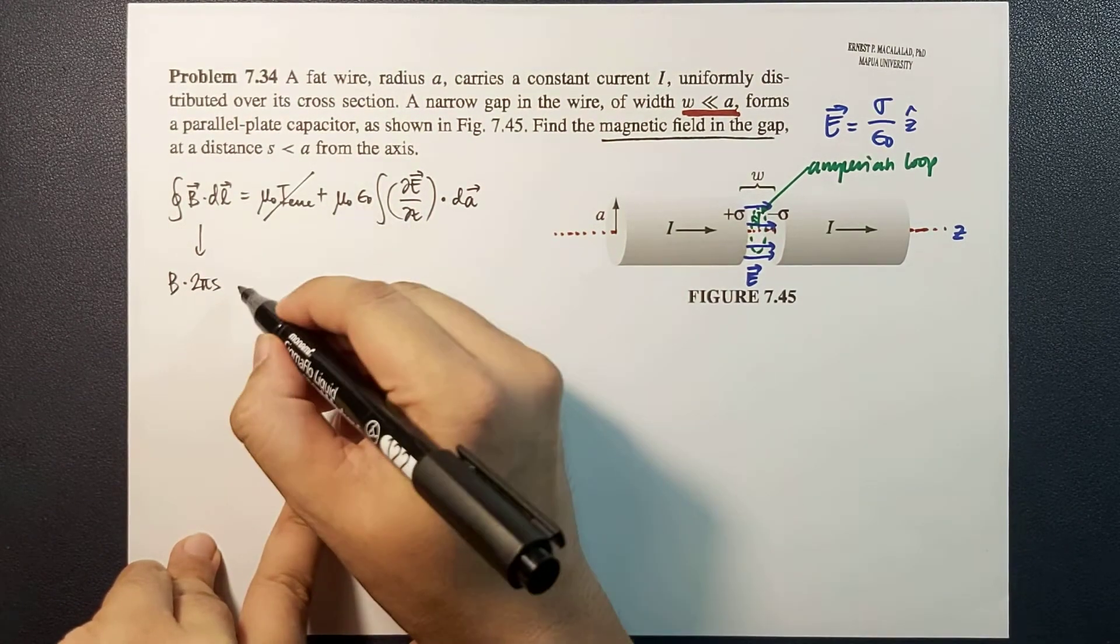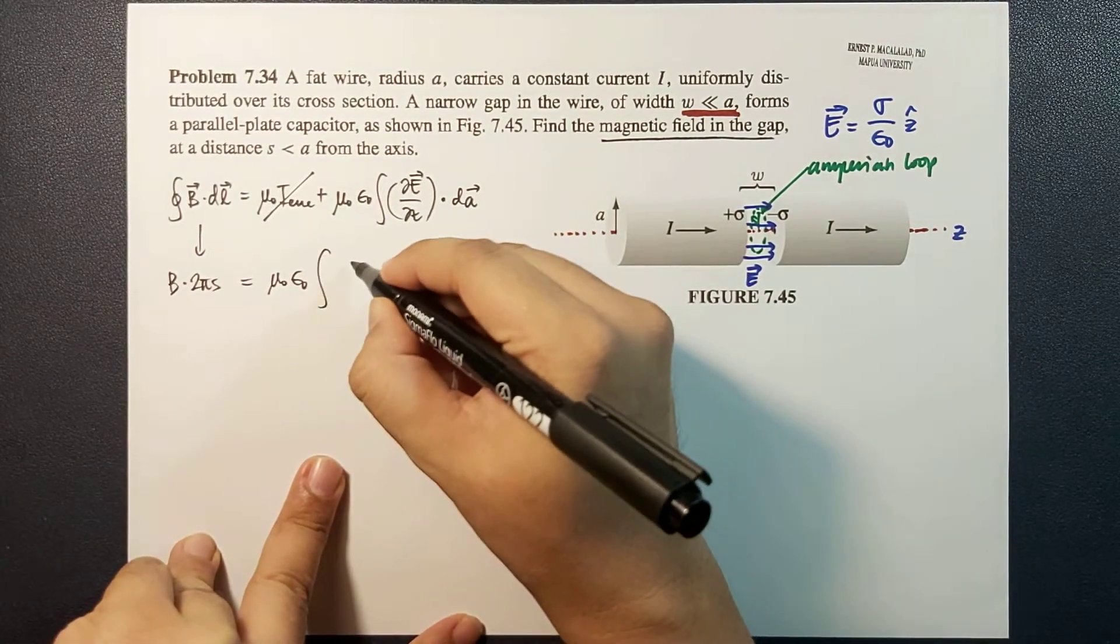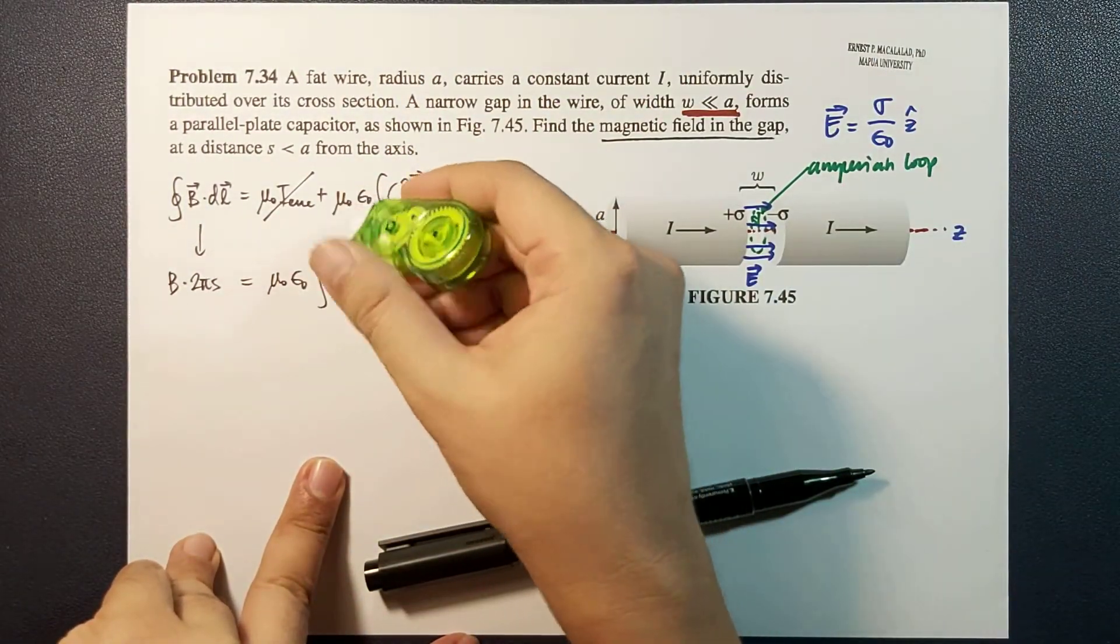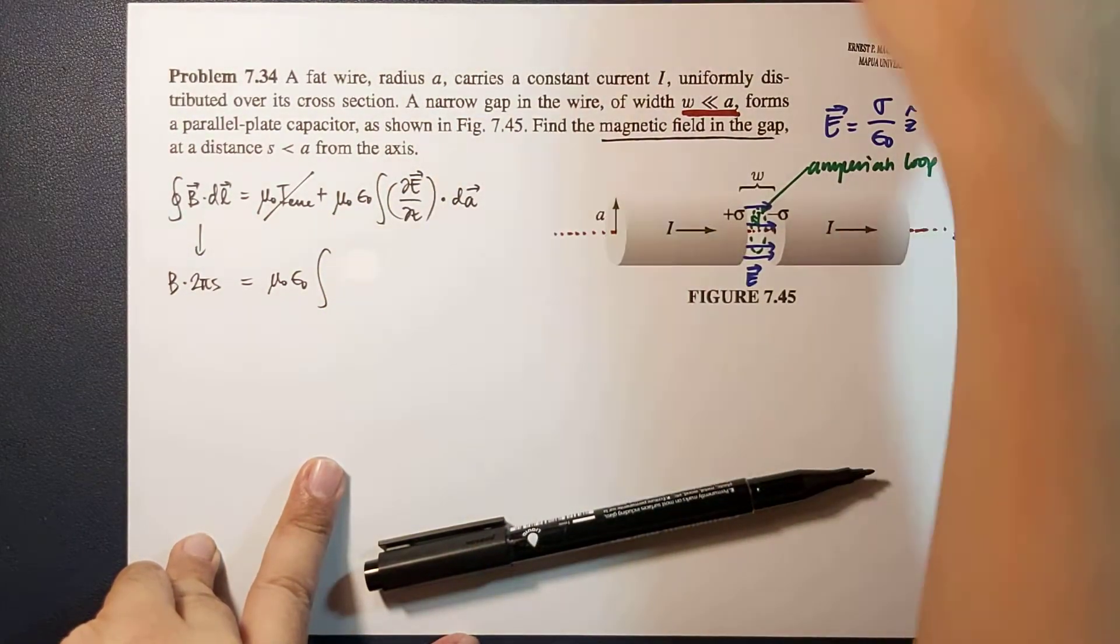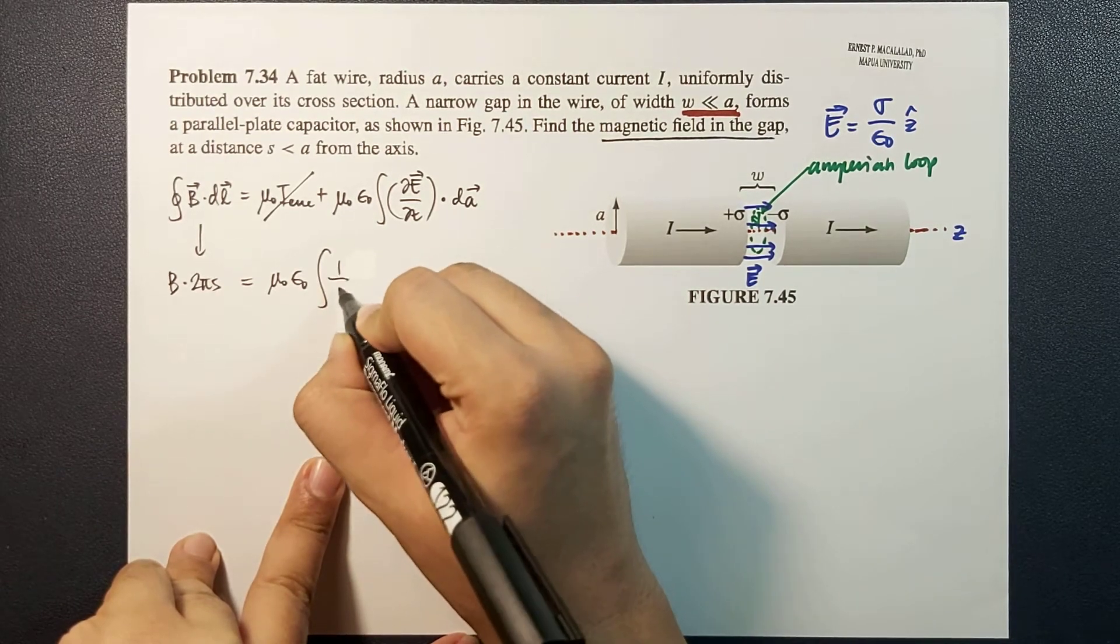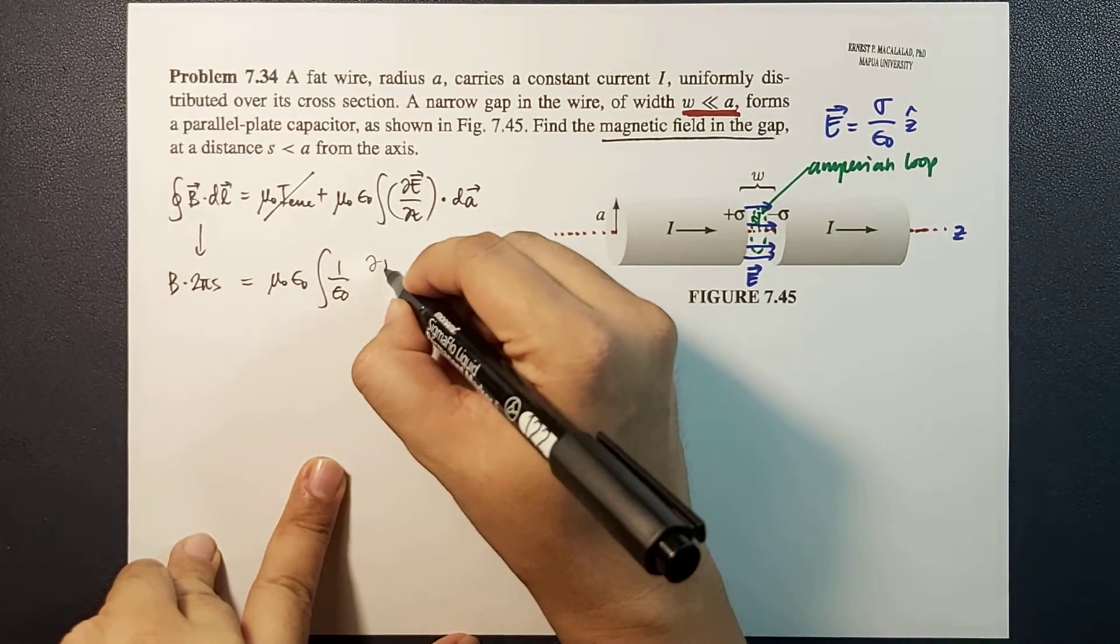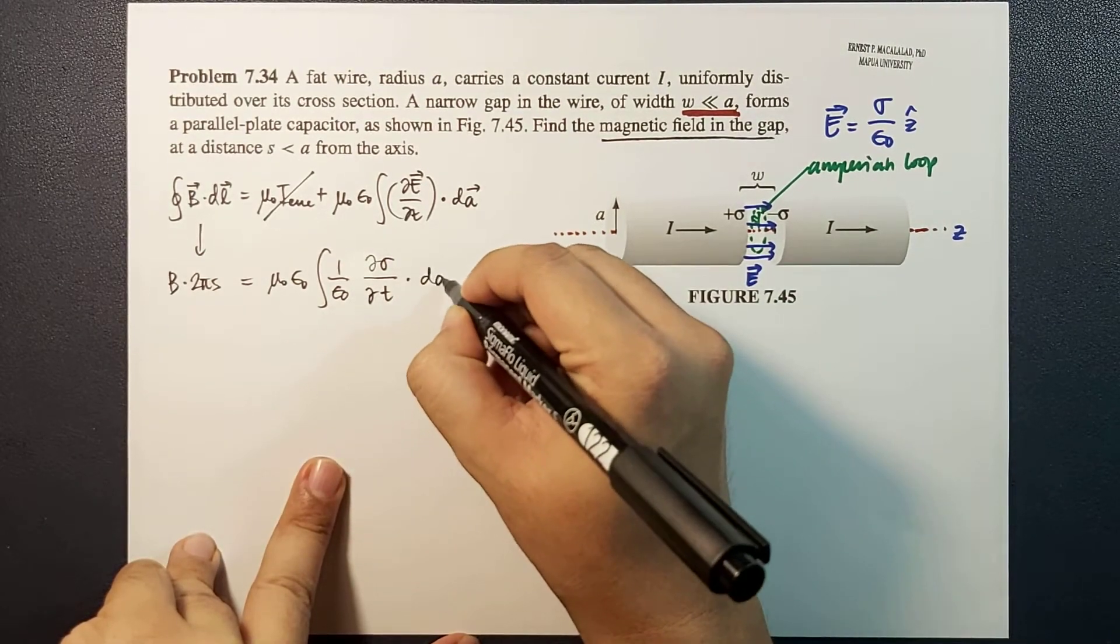And this is now equal to mu naught epsilon naught times integral of derivative of E with respect to time, where E would be sigma over epsilon naught. So in this case, this becomes 1 over epsilon naught times derivative of sigma with respect to time, dot dA.